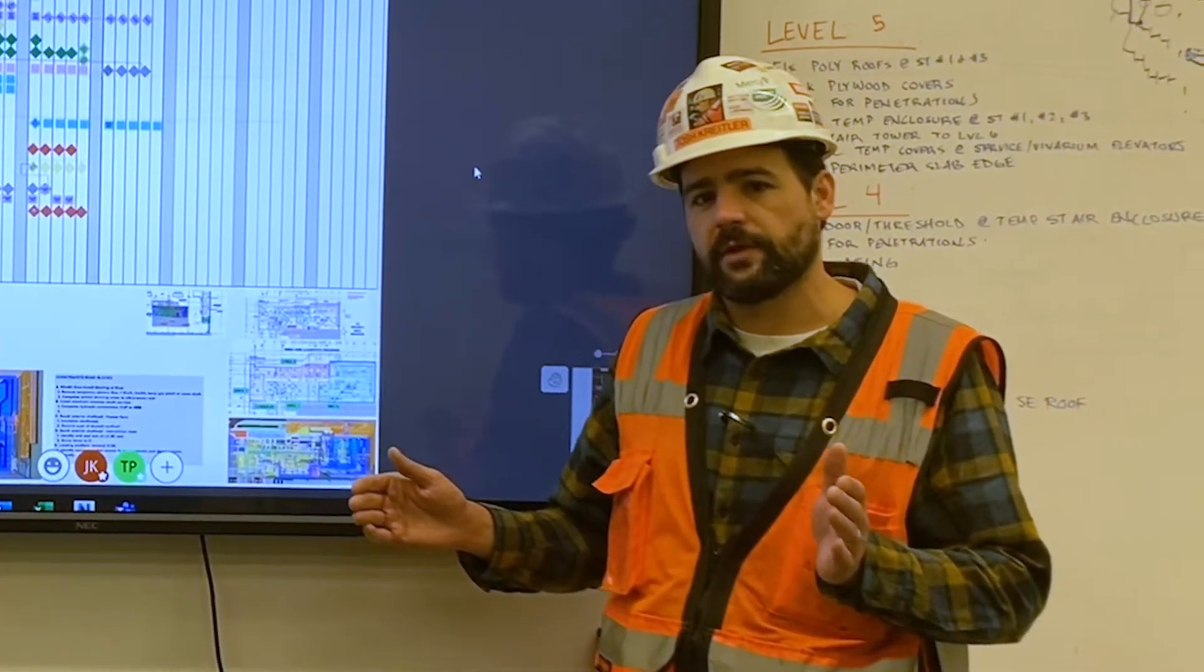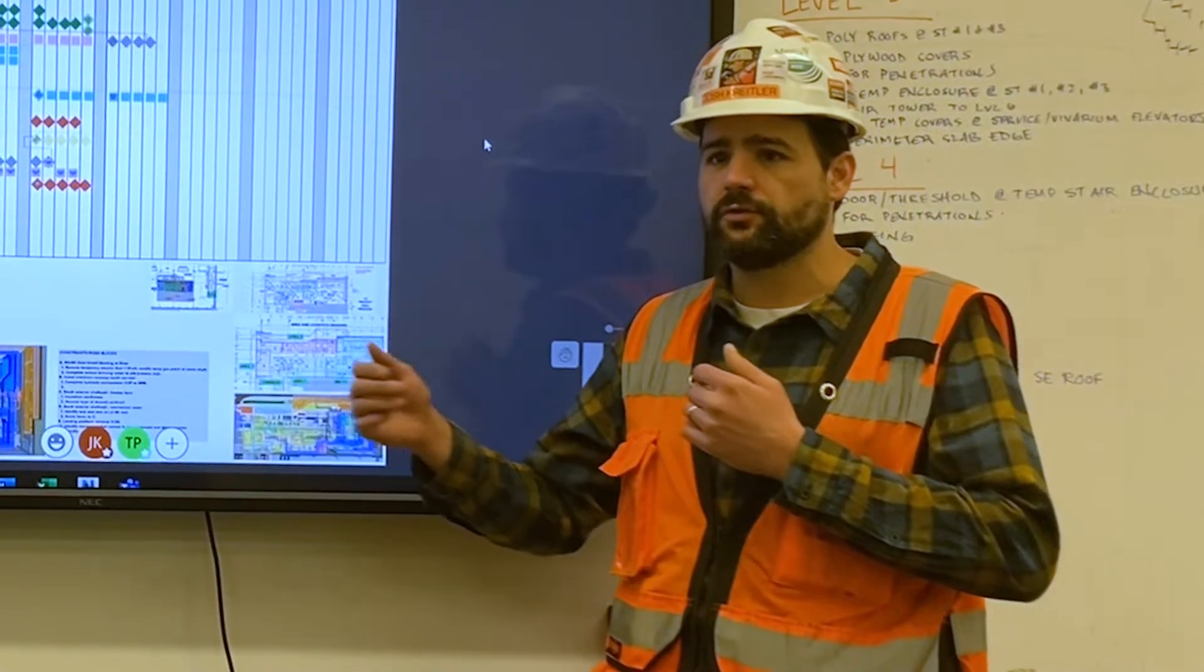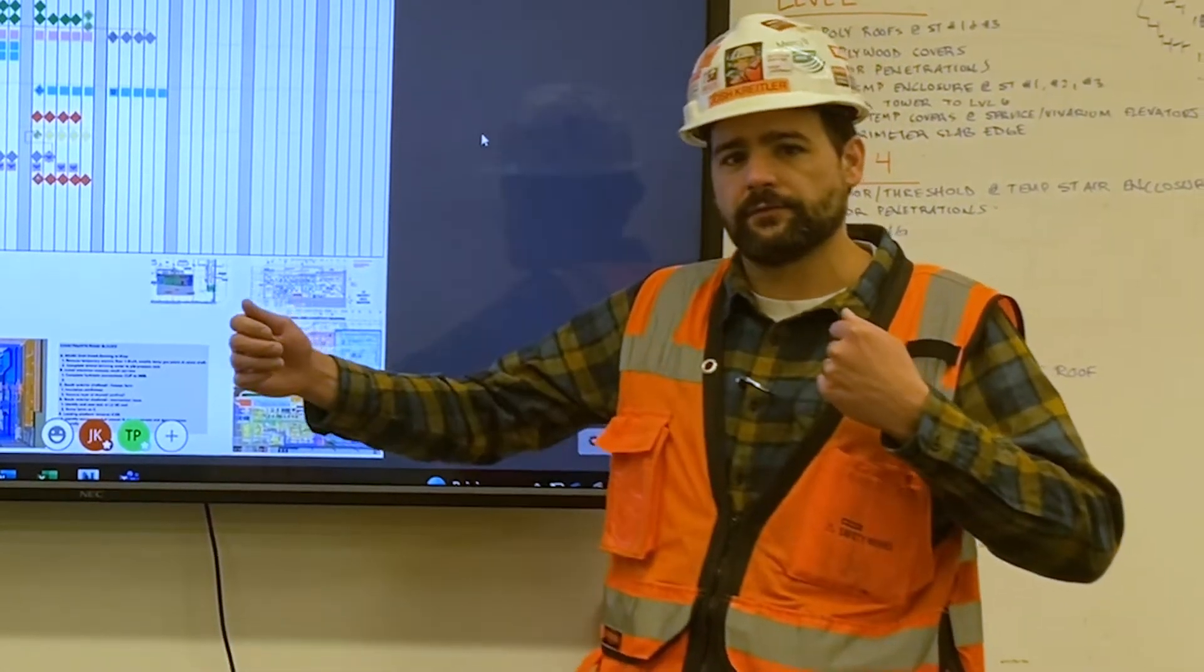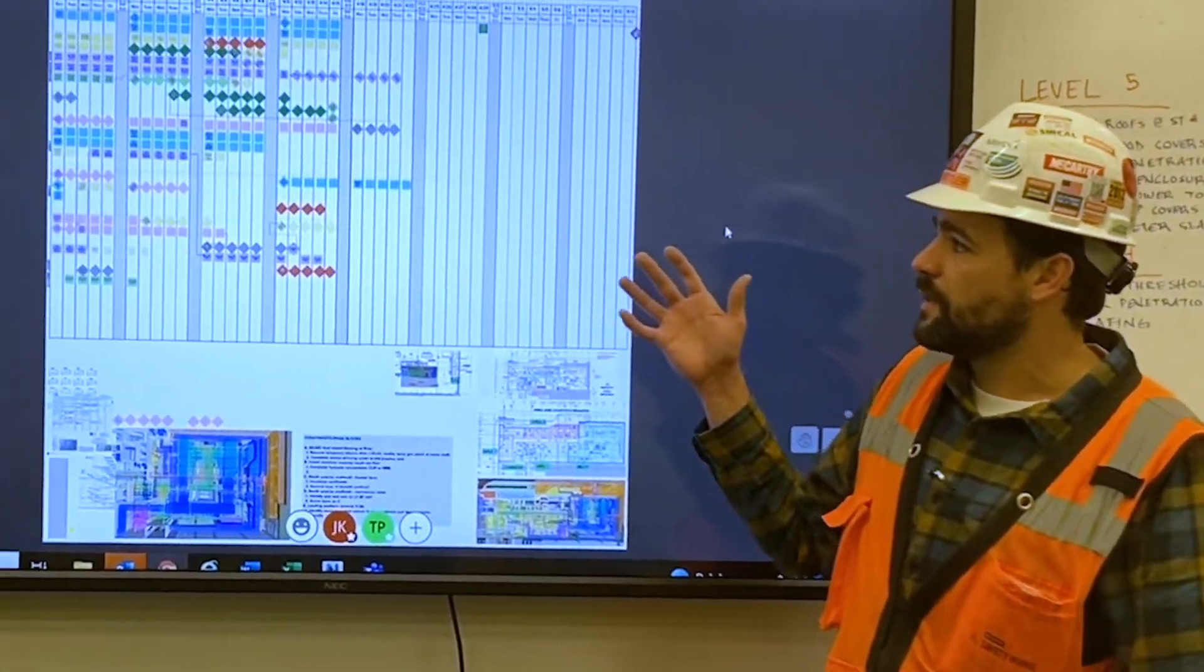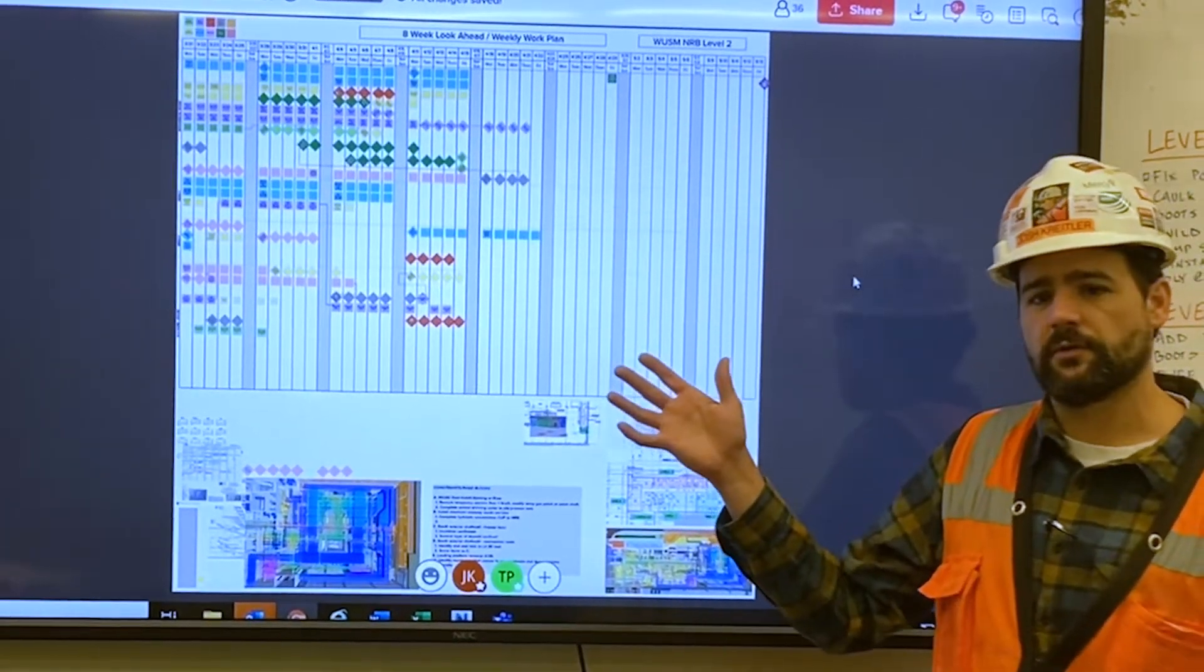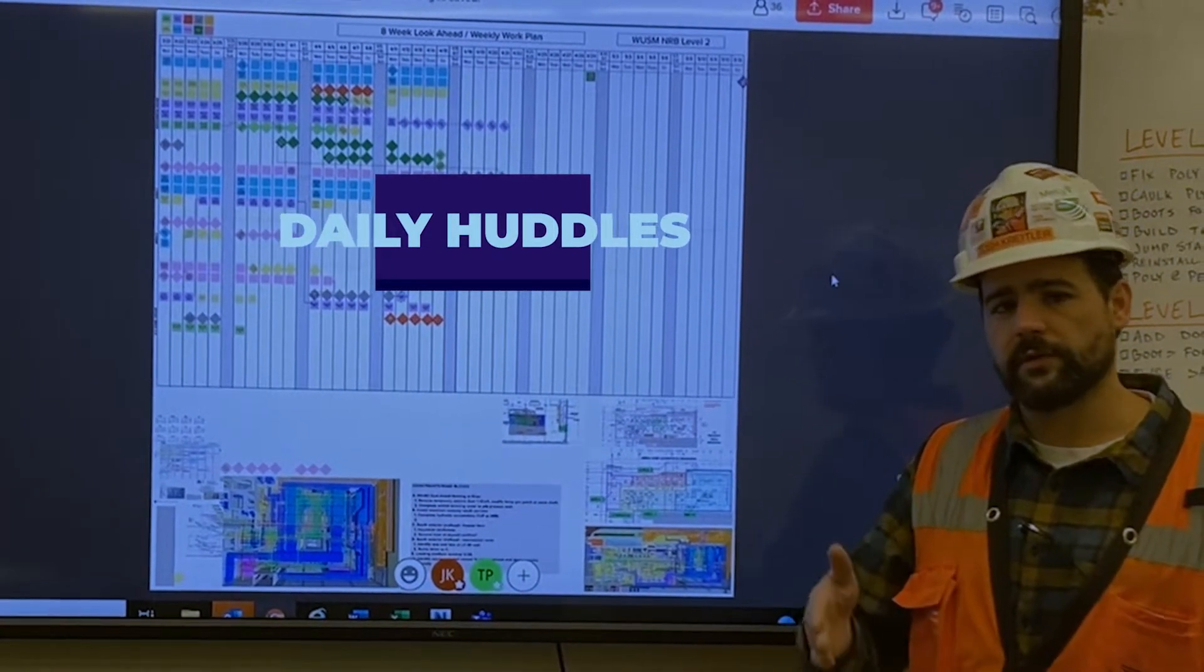So they're represented on our tack plan, but we're implementing a last planner system process in Mural to plan out our look-aheads for six to eight weeks. We work with the trades to build this out and then this gets taken out to our huddles, and that's what our daily huddles are checking against for our weekly work plans and our daily activities.